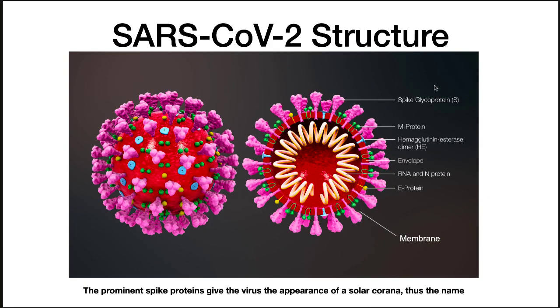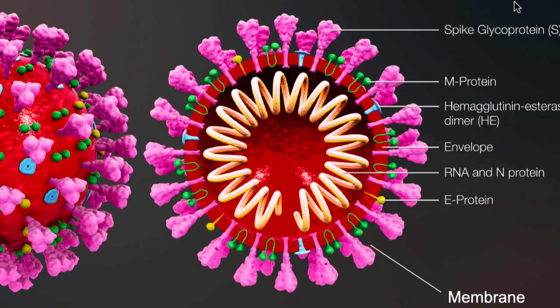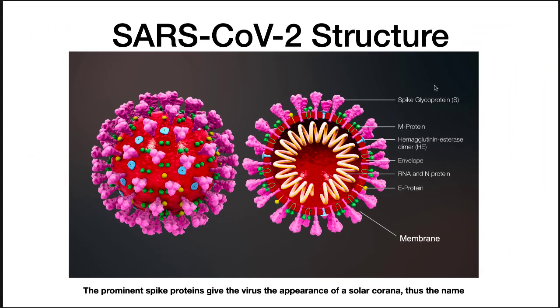SARS-CoV-2 is an envelope virus with a positive single-stranded RNA genome. The membrane is decorated with a number of proteins, with the spike glycoprotein probably being the most important for immunity. The prominent spike proteins give the virus the appearance of a solar corona, hence the name of this virus family. This virus family has been around for years, but most of the time they just cause simple colds. It's only in the last decade or so that we've started to get these severe lower respiratory infections, and SARS-CoV-2 is the first one that's caused a global pandemic.